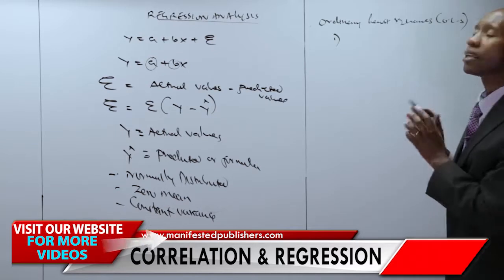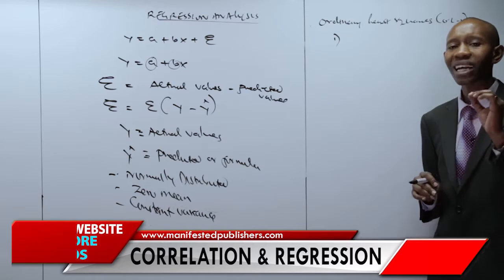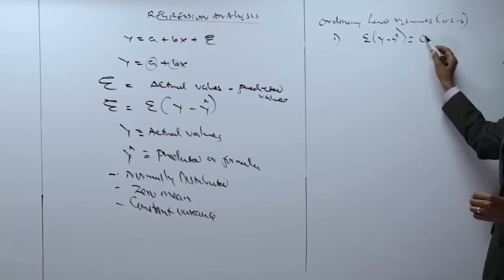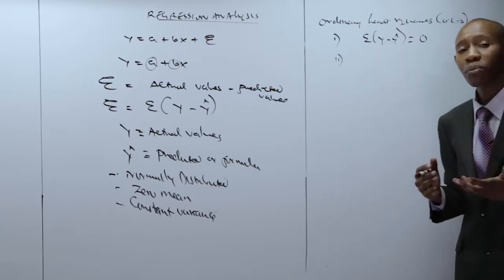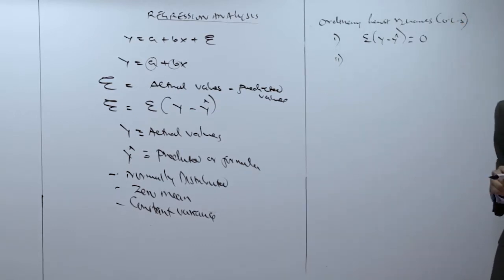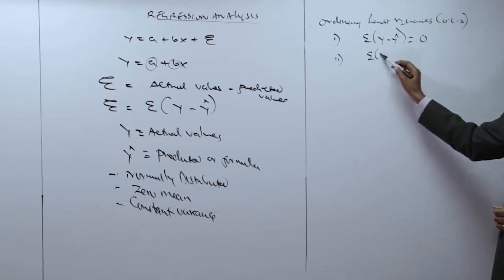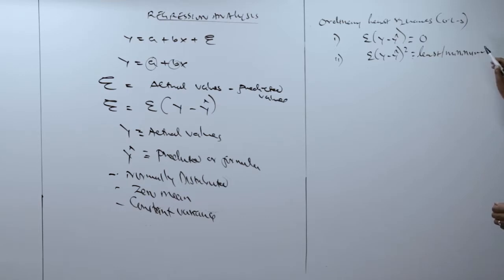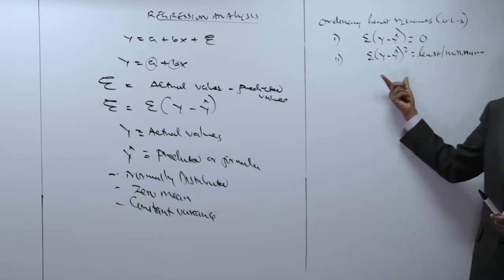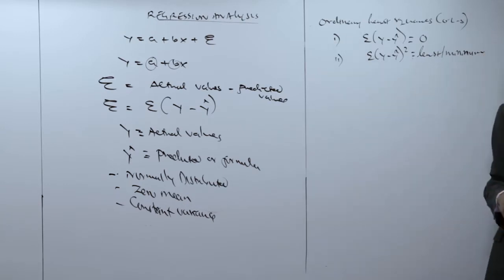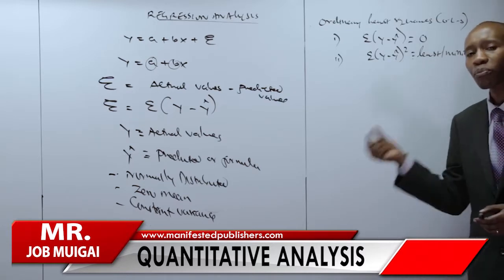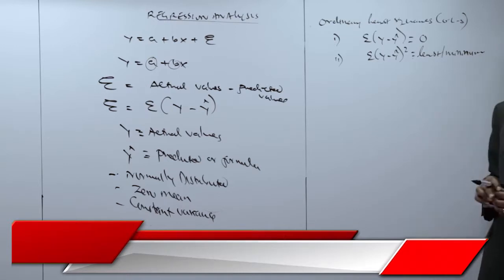The use of the ordinary least squares procedure requires at least two properties of the line of best fit. One is that the sum of the error, which is the sum of y minus y-hat, would be equal to zero. Secondly, the sum of these errors squared would be least, or minimum, compared to other methods. For those two properties, it becomes the best method to determine parameters a and b, ensuring that the size of the probable error is as minimum as possible.